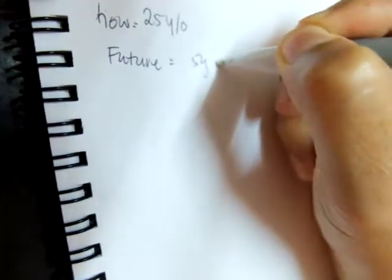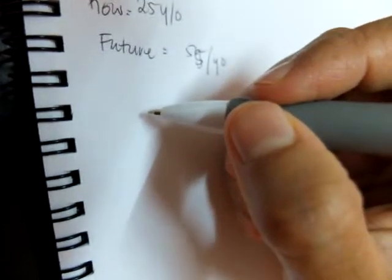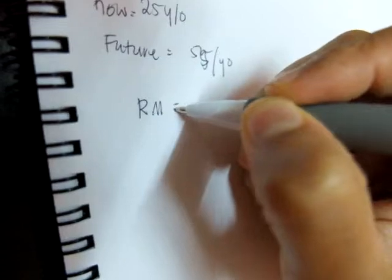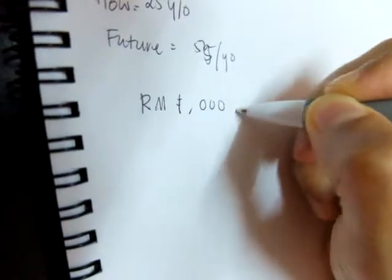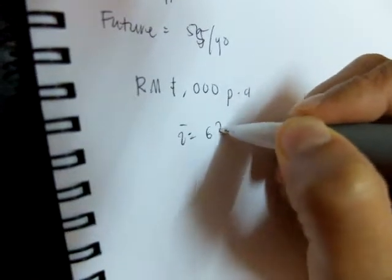Future is 55 years old. And she saves, that's a cash flow, 1000 per annum. Annual return is 6%.